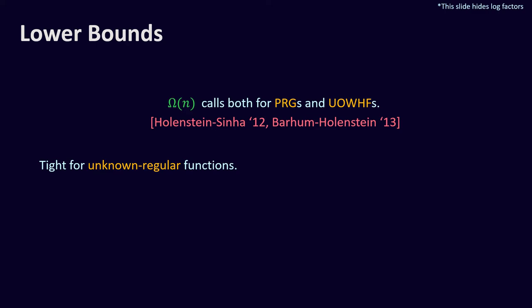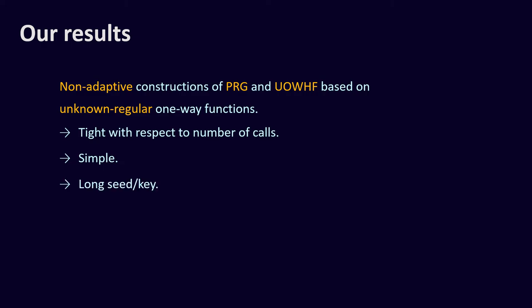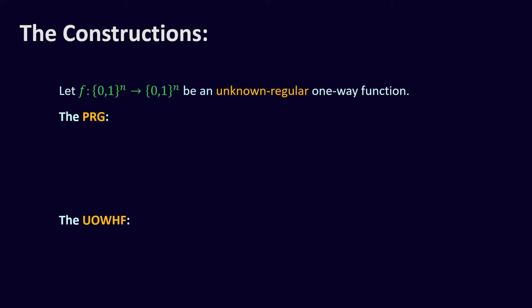These constructions, however, are adaptive. So we can ask if this adaptivity is necessary. Can we construct a PRG or universal one-way hash function from an unknown regular one-way function with a linear number of non-adaptive calls? In this work, we give an answer by showing non-adaptive constructions of both PRG and universal one-way hash functions based on unknown regular one-way functions. The constructions are tight with respect to the number of calls and are relatively simple, but their seed or key length is n-squared, compared with linear seed or key in the adaptive constructions.